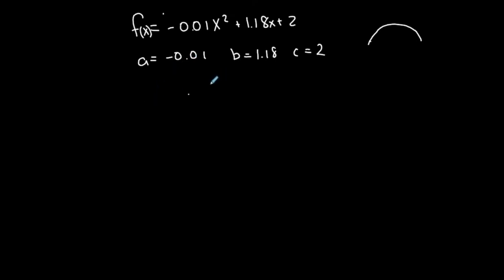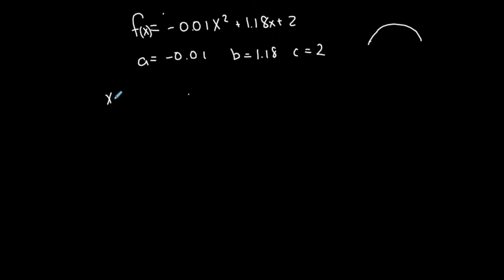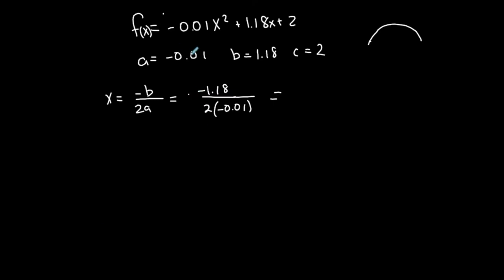Now there are a couple of questions I might ask you. Let me find all the same details. For example, let's find the vertex and the axis of symmetry. So let's find the x-coordinate of the vertex first, which is the opposite of b over 2a. And b is 1.18, so I'm taking the opposite of 1.18 and dividing by 2 times the coefficient a, which is negative 0.01. Be careful with your sign. 1.18 divided by 2 times 0.01 — negative divided by a negative is positive — so this is 59. The x-coordinate of my vertex is 59.